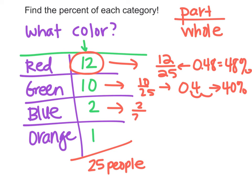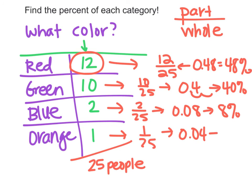Blue, 2 out of 25 - I'm going to divide that, it's not going to be very much. 2 divided by 25 is 0.08 which ends up being 8% of people chose blue. And then orange, 1 out of 25 is 0.04 which is 4% of people chose orange.